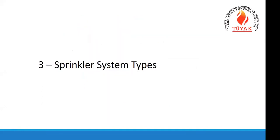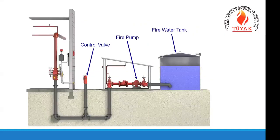We have different sprinkler system types, as you see on the schematic. We have a dry system and wet systems. Especially in projects in Turkey, almost in all projects, we have a fire water tank supplying our fire protection system, and there is a fire pump room. Inside the building, we have an alarm valve and sprinkler systems — a complete system consisting of water supply, pump system, and valve systems.